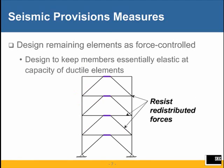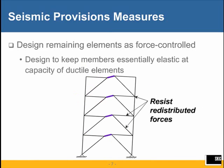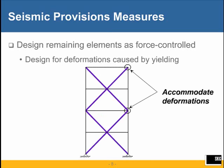The second step is to design the remaining elements as force-controlled. As part of that, you design the members to keep them essentially elastic when we reach the capacity of those deformation-controlled or ductile elements. When the links of the eccentrically braced frame reach their inelastic capacity, the forces in the members will likely be very different than through an elastic analysis. Therefore, forces are redistributed at this level of deformation and yield in those ductile elements. The members are designed according to the main AISC specification, which ensures they remain essentially elastic when you reach the capacity of the ductile elements.